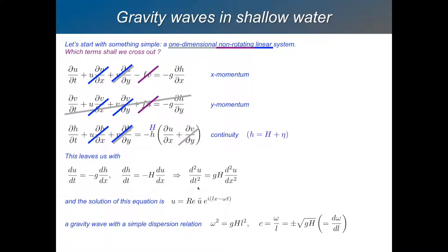So d squared u by dt squared is a constant, which is the square of the phase speed, times d squared u by dx squared. And the solution to this equation for u is just this propagating waveform. u is the real part of some amplitude coefficient, u tilde, e to the i,